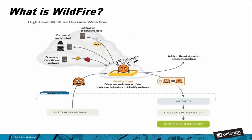Next, let's look at a high-level WildFire decision workflow. Depending on how you configure your firewall policy, it can forward files to the WildFire cloud to analyze them and determine if something is malware, a virus, or a malicious program. It places these files in a virtual sandbox and looks for any behavior — whether it's trying to transmit sensitive data off the network, exhibiting command and control communication, or attempting to download additional malware. It observes and detects over a hundred malicious behaviors to identify the malware. After it makes a decision, it will add to the threat signature research database, then to the pattern database, then to the single pass pattern match, and then report and enforce your security policy.